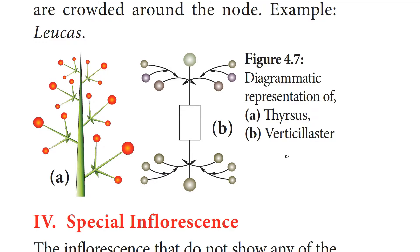The next type is verticillaster, in which the main axis bears two opposite lateral sessile cymes. Each cyme produces monochasial scorpioid lateral branches — from one axil of the main pedicel another flower develops, alternating sides. The flowers are crowded around the node region. Example: Leucas.